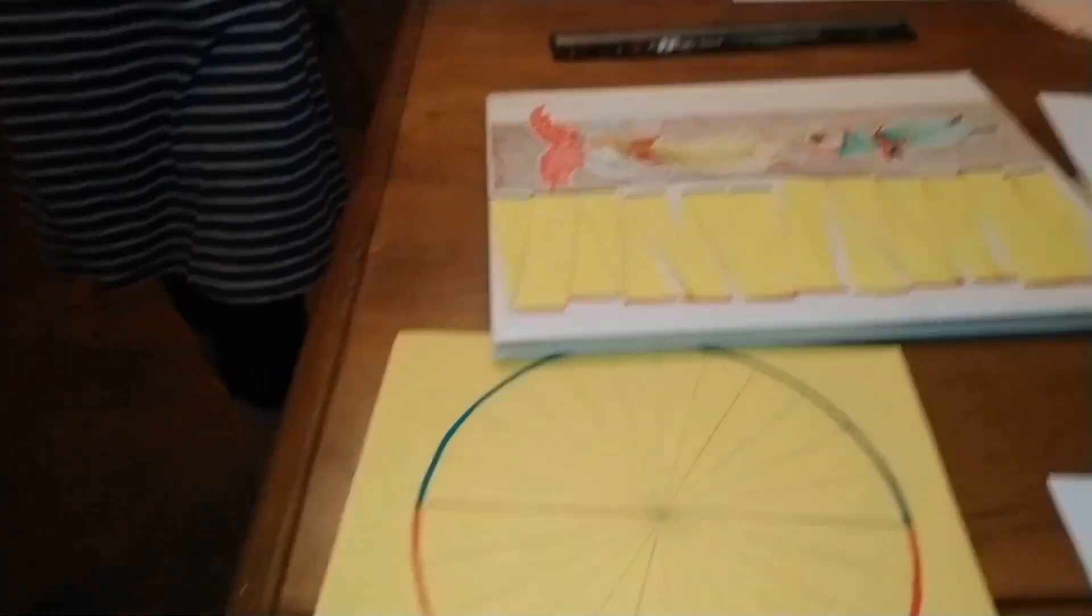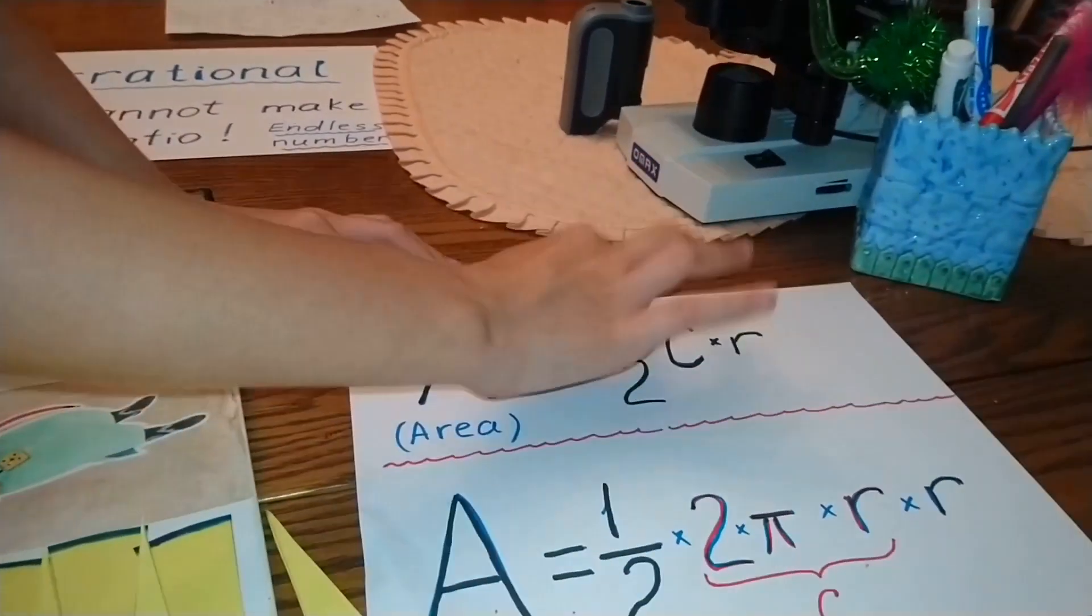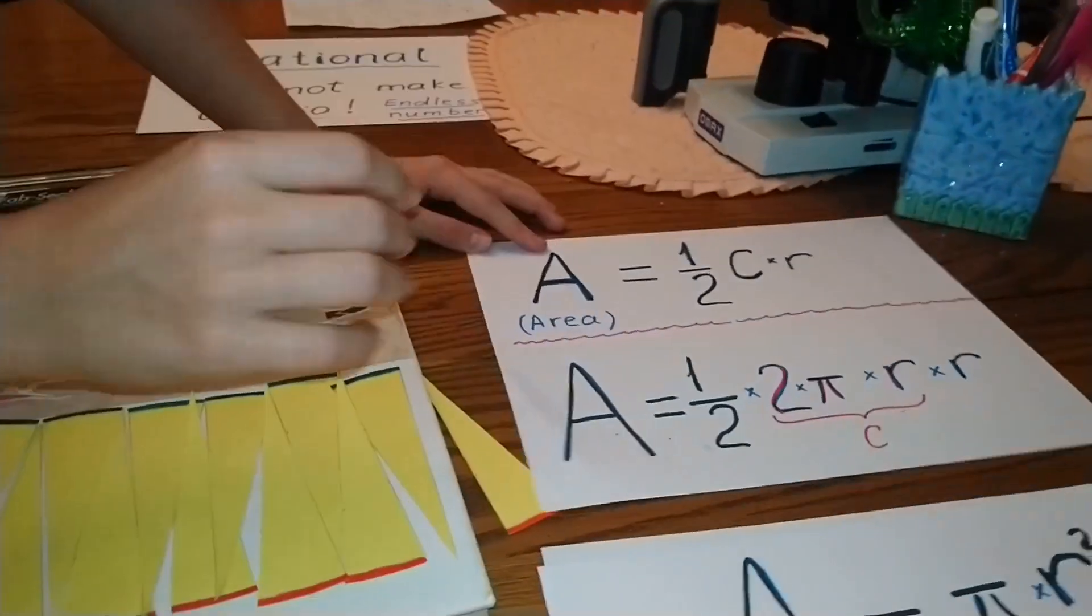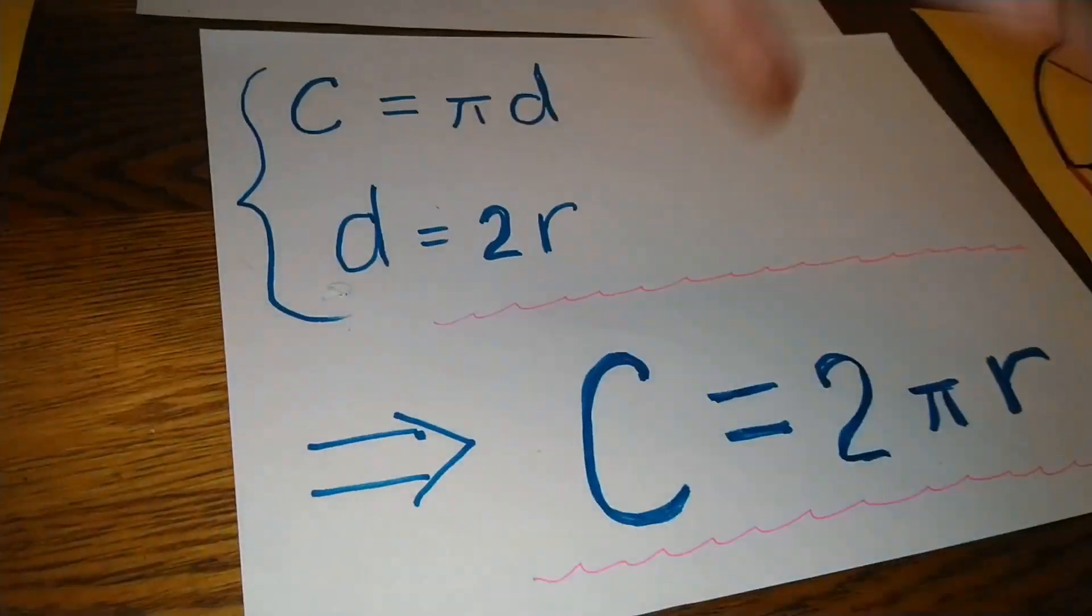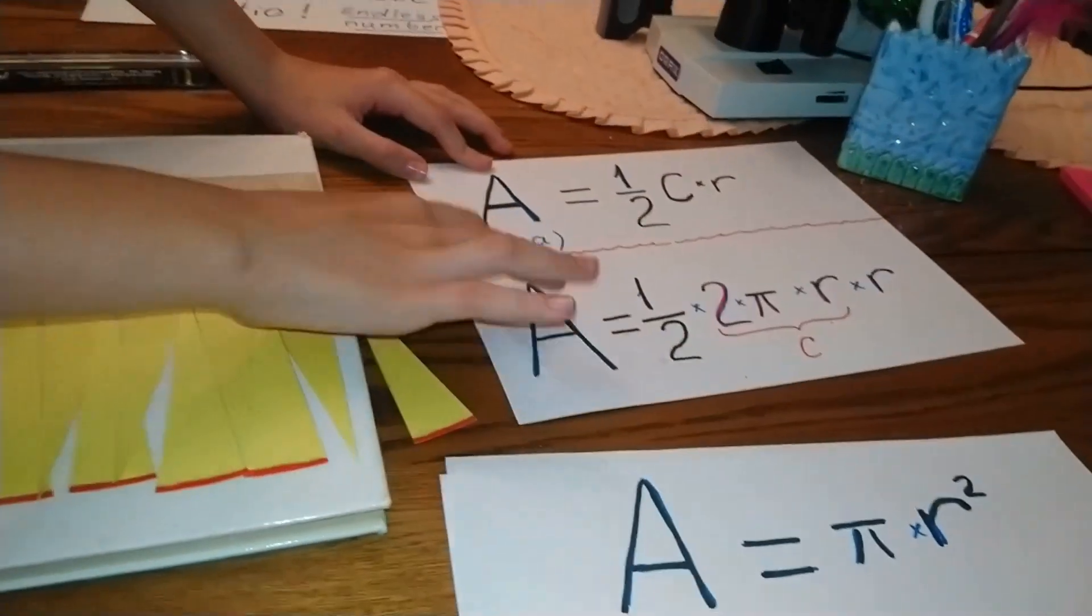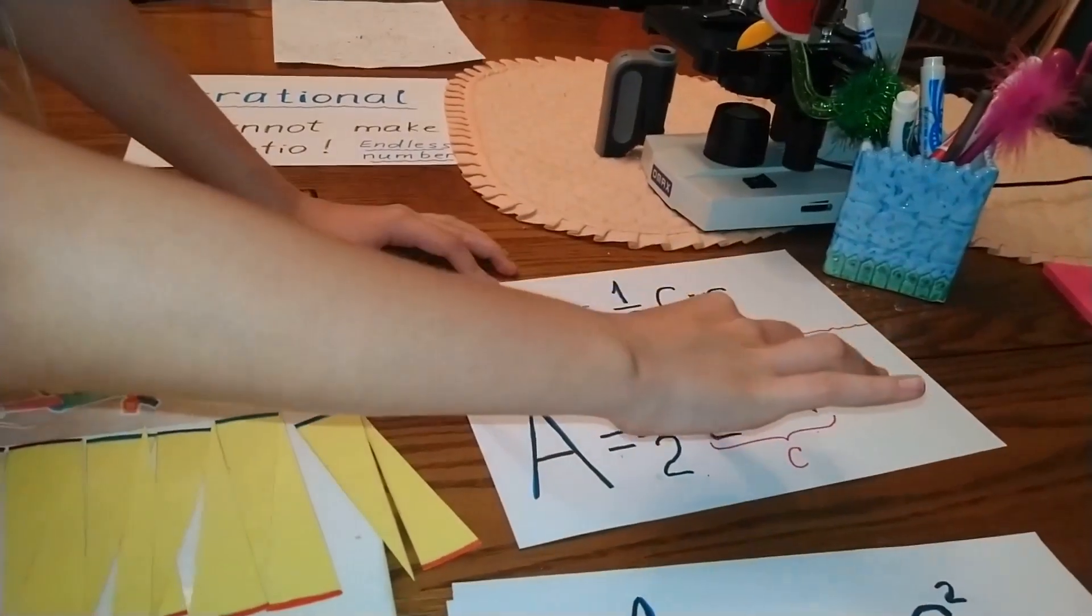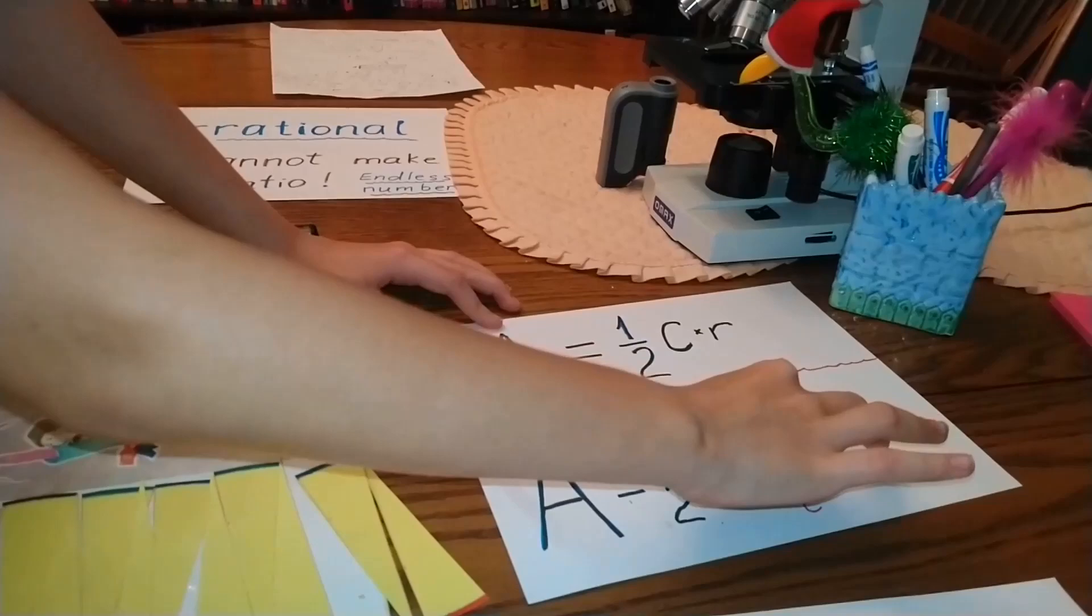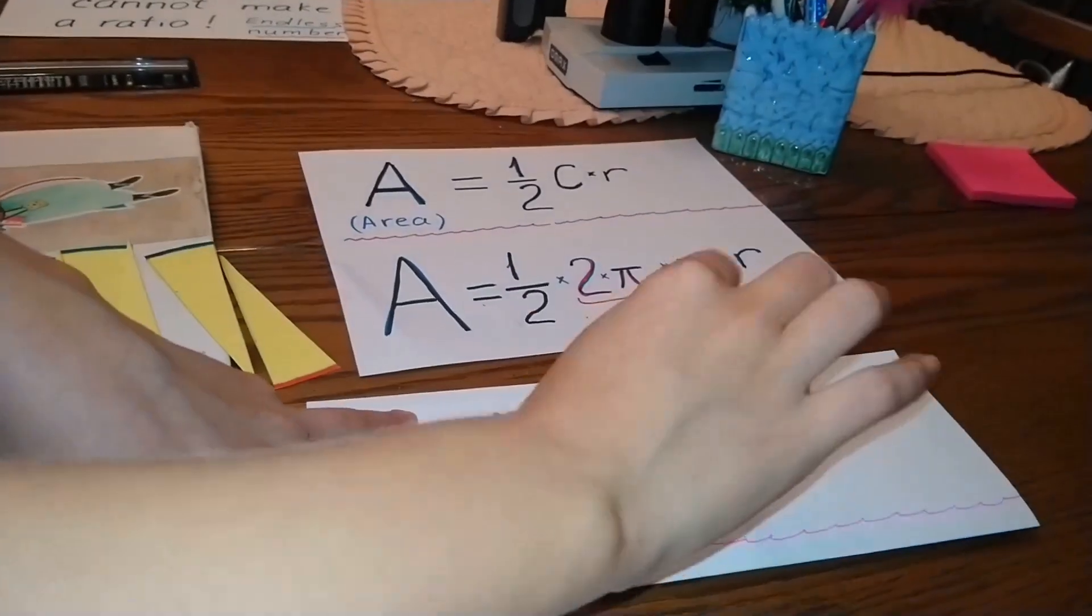So the area equals one-half circumference times radius. Or, I took this equation and substituted, which will be A equals one-half times 2πr times r. Area equals πr².